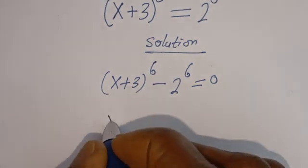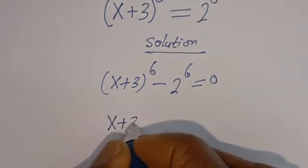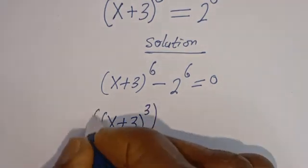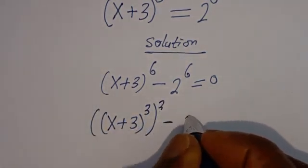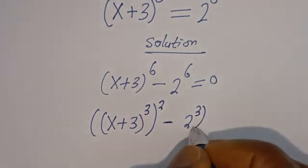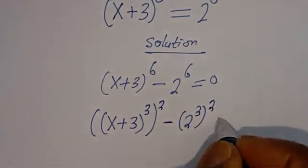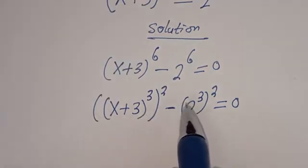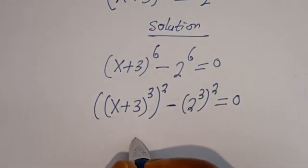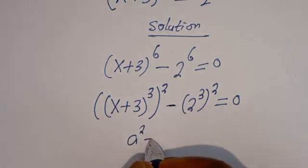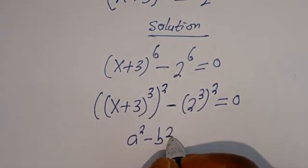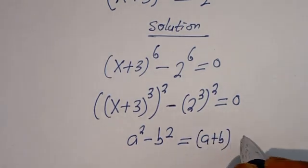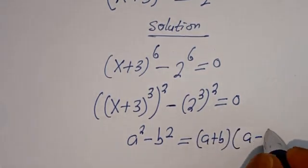Then this can be written as x plus 3 to the power of 3, squared, minus 2 to the power of 3, squared, is equal to 0. This is in the form of a perfect square difference. That is, if you have a squared minus b squared, this is equal to a plus b, bracket, a minus b.